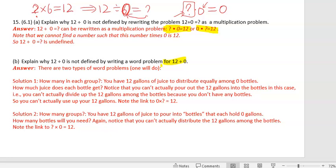We cannot find an answer, a number for these equations. If we cannot find an answer for this equation, that means 12 divided by zero is undefined because there's no answer. So that's how we use a multiplication problem to explain why 12 divided by zero is undefined.